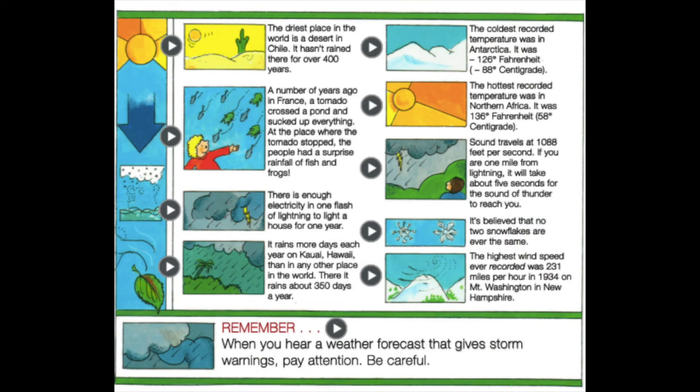The driest place in the world is a desert in Chile — it hasn't rained there for over 400 years. A number of years ago in France, a tornado crossed a pond and sucked up everything. At the place where the tornado stopped, the people had a surprise rainfall of fish and frogs.